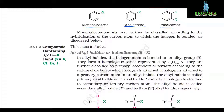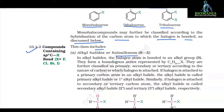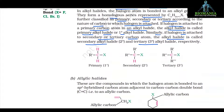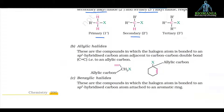Mono-halo compounds may further be classified according to the hybridization of the carbon atom to which the halogen is bonded. 10.1.2 Compounds containing sp3 C-X bond. This class includes alkyl halides or haloalkanes, i.e. RX. In alkyl halides, the halogen atom is bonded to an alkyl group. They form a homologous series represented by CnH2n+1X. They are further classified as primary, secondary, or tertiary according to the nature of the carbon to which halogen is attached. If halogen is attached to a primary carbon atom, the alkyl halide is called primary alkyl halide. Similarly, if halogen is attached to the secondary or tertiary carbon atom, the alkyl halide is called secondary or tertiary alkyl halide respectively.